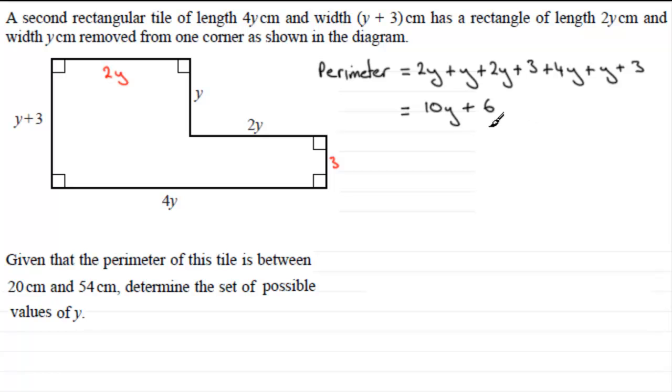And we're told that this perimeter lies between 20 cm and 54 cm, so I can put therefore that 10y plus 6 lies between 20 and 54.